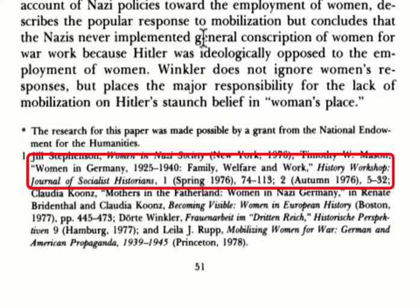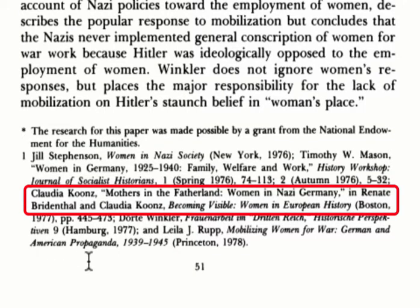Returning to the article, Mason's Women in Germany 1925–1940 is actually two articles in the Journal of Socialist and Socialist Historians, one published in spring 1976 and the other in autumn of the same year. Note that the volume is identified before the date, another clue that it's a journal article. The next citation by Kuntz is a book chapter — I know this because the citation includes 'in,' and it's in Bredenthal and Kuntz's book Becoming Visible: Women in European History.